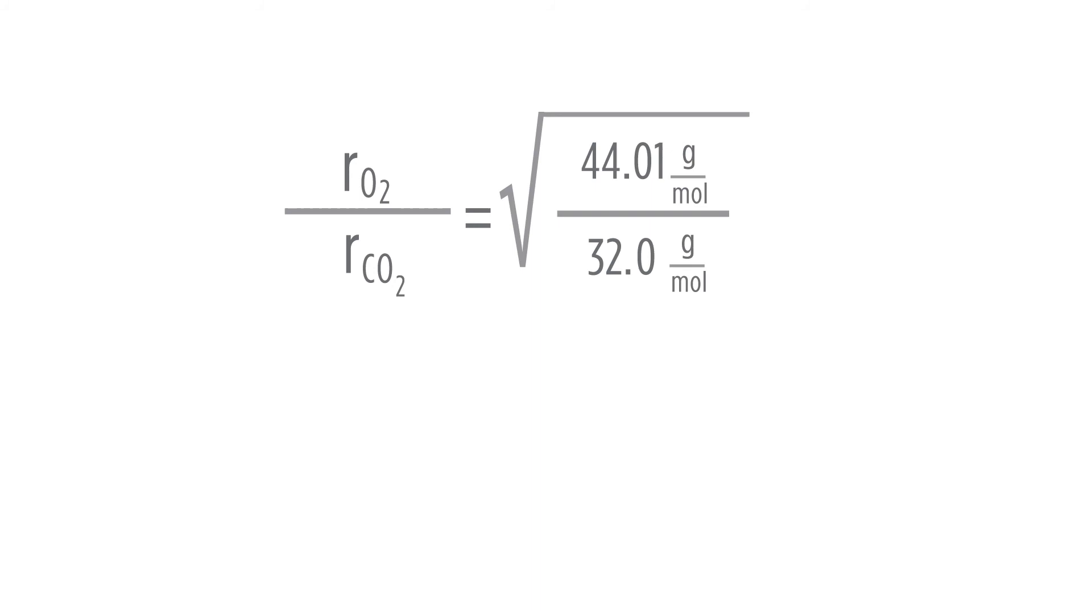You'll see that we have the square root of 44.01 grams per mole divided by the square root of 32.00 grams per mole. We do this calculation and we see that the rate of oxygen over the rate of carbon dioxide is equal to 1.173.